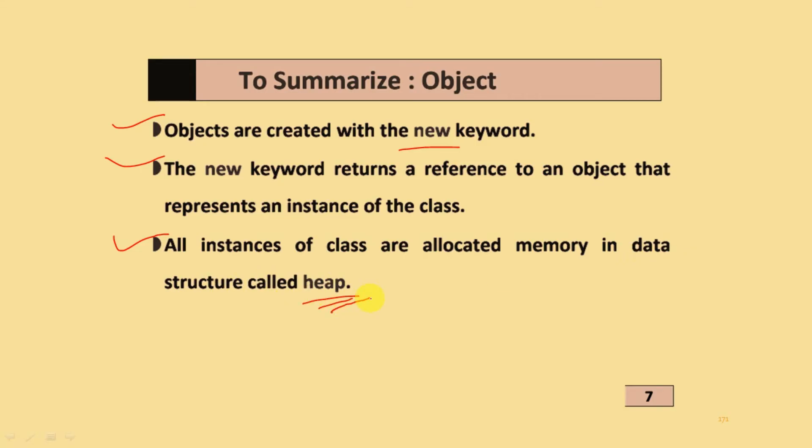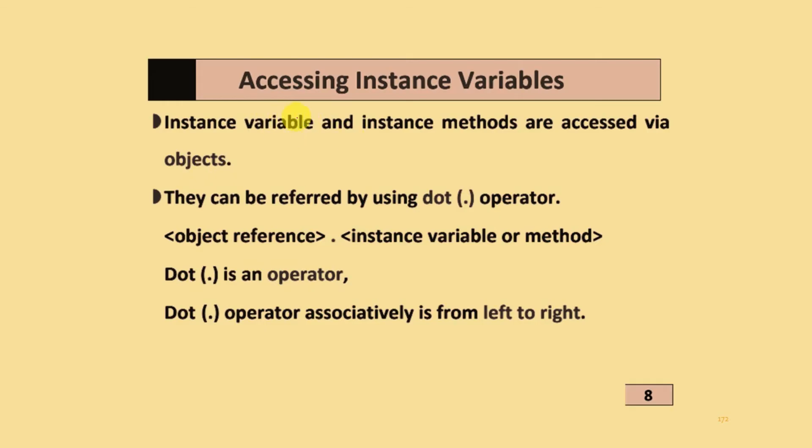Accessing instance variables: instance variables and instance methods are accessed by using objects and they can be referred by using the dot operator. You write object reference dot instance variable or method. The dot is an operator and the dot operator's associativity is from left to right side.